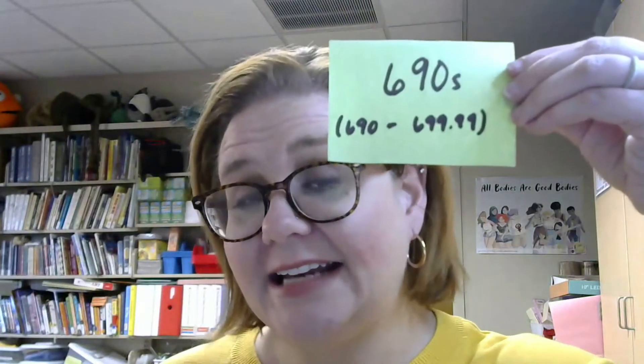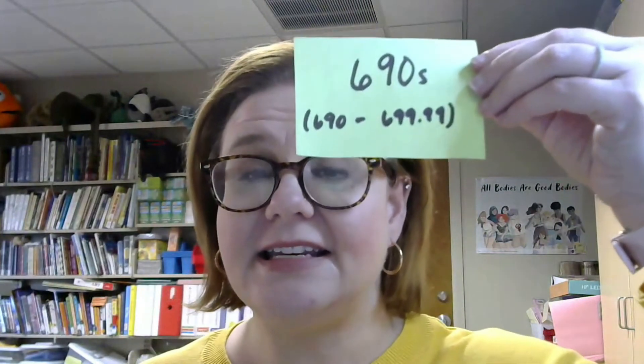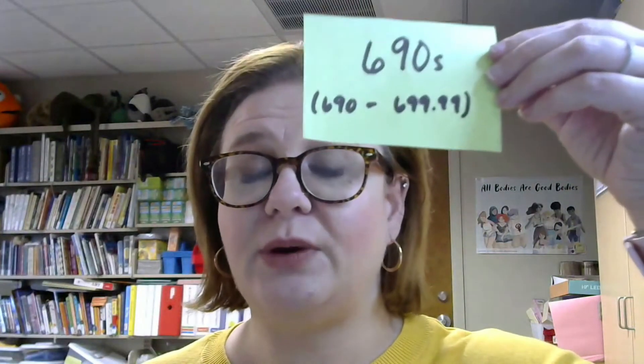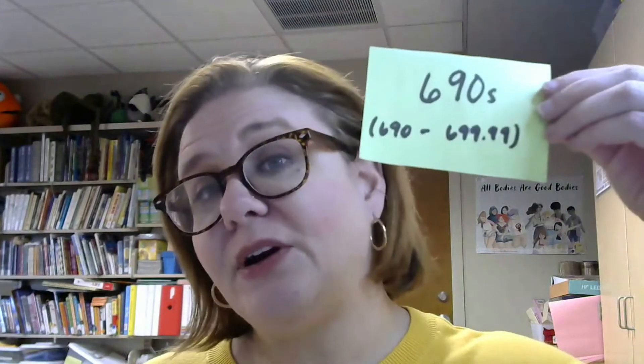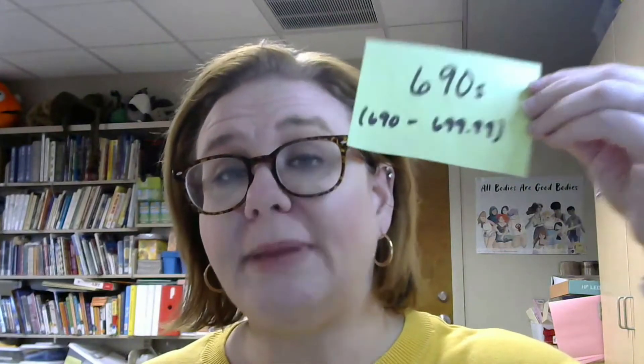And then finally we have the 690s — that's 690 to 699.99 — and this is where you find information regarding building and construction. We have lots of patrons in the children's department who love construction vehicles: skip loaders, bulldozers. So that would be where you would find information about those building and construction vehicles, as well as other tools and theories regarding building and construction.